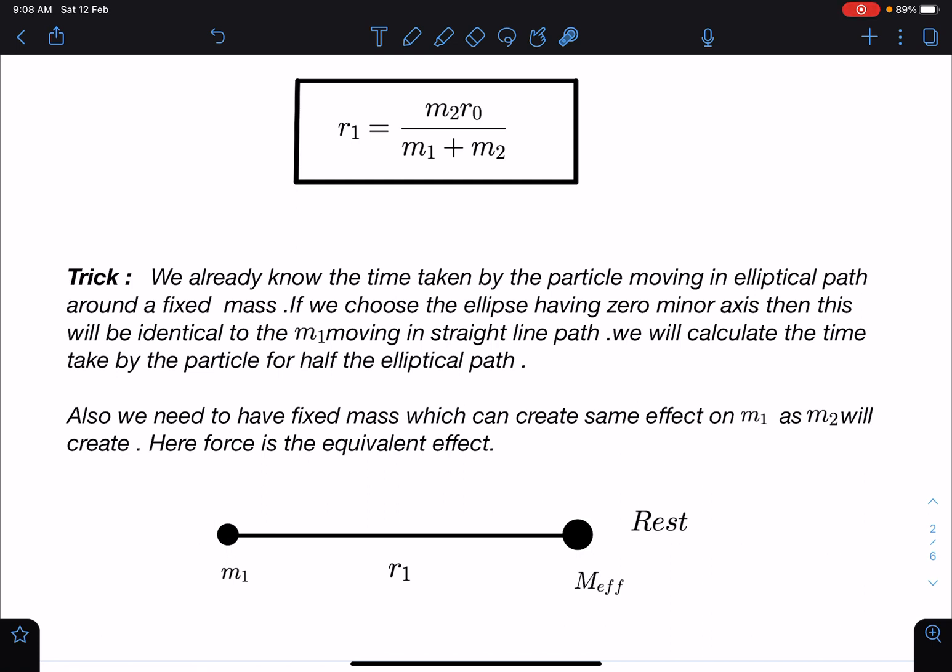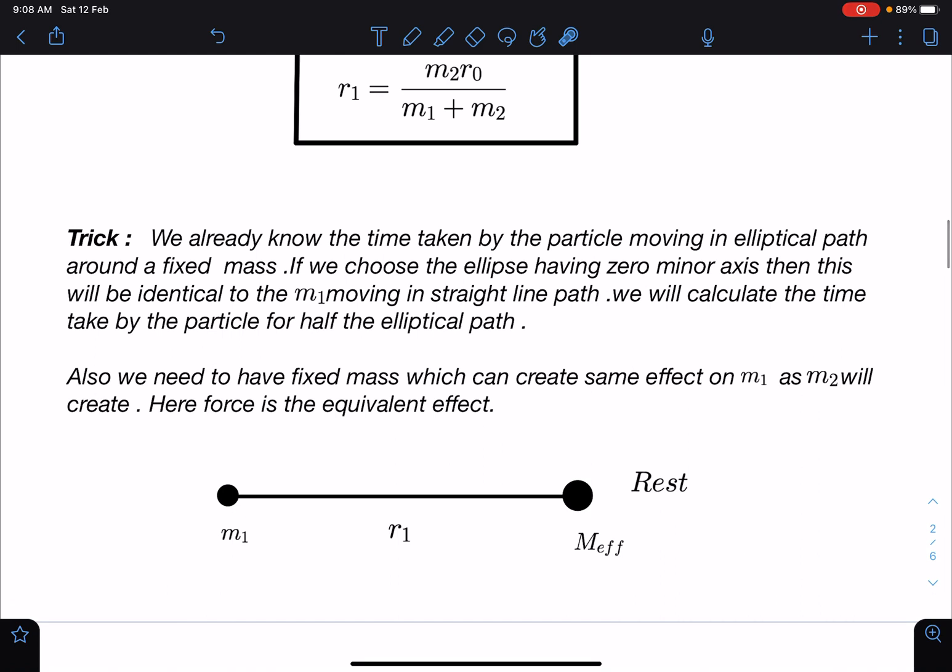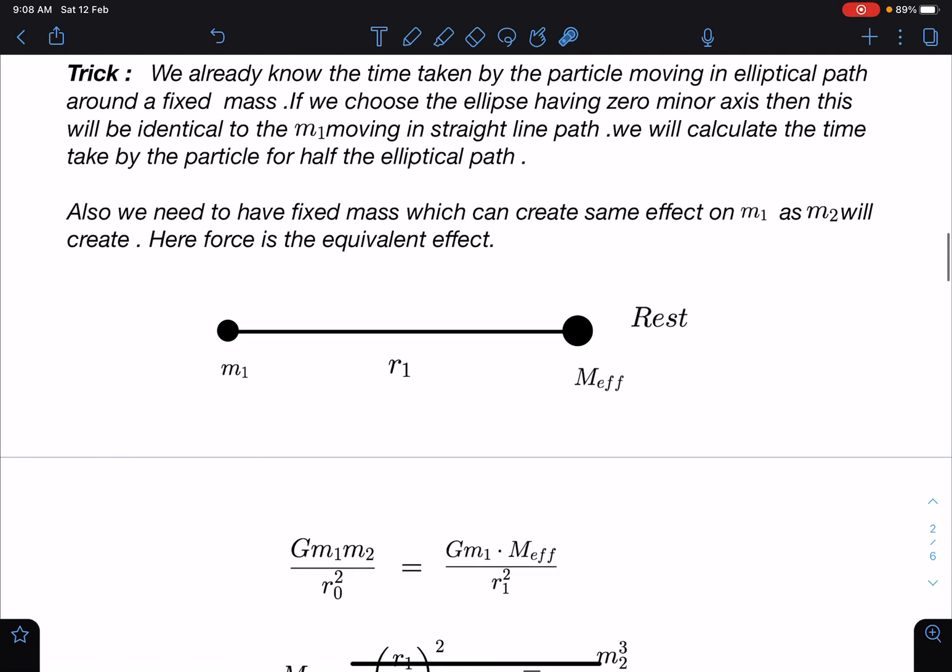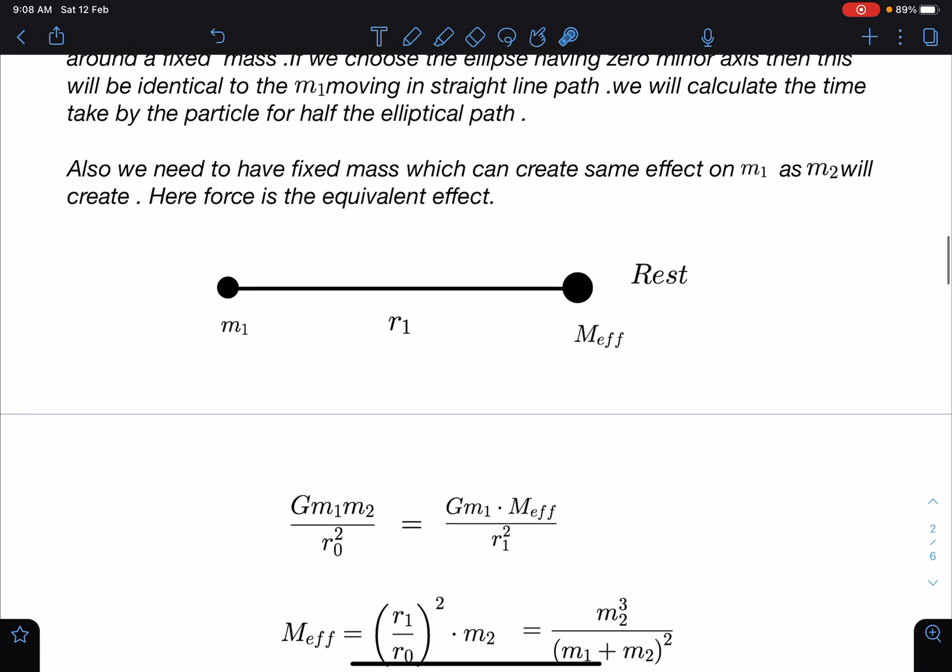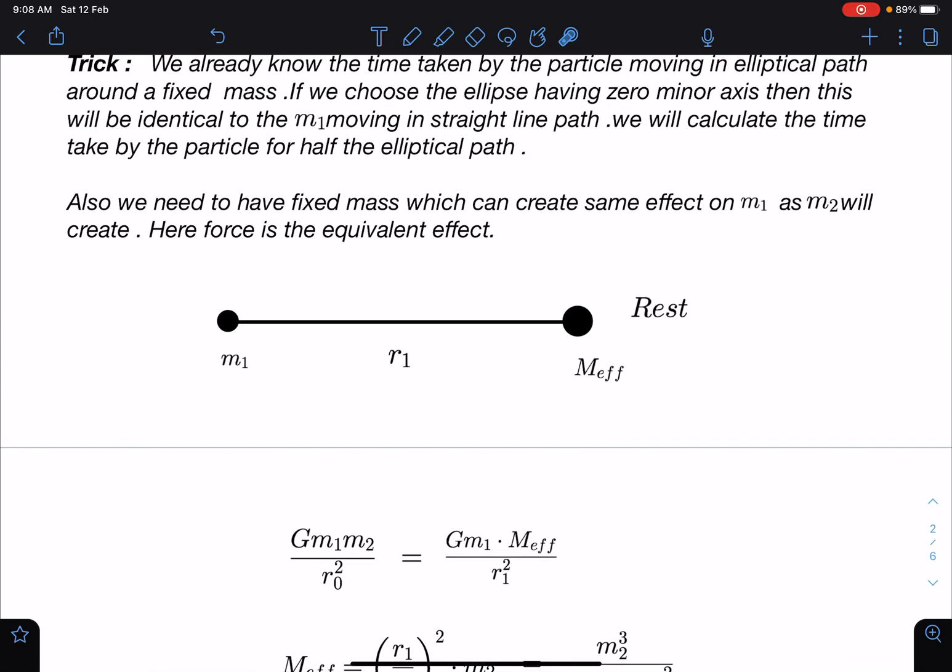So in order to equate that effect, I'll prefer the initial point itself. So if you see at initial point, if m2 is creating certain force on m1, this m effective also should create that similar field. So here I can write G m1 m2 by r0 squared, and this is G m1 m effective by r1 squared. So r1 we have already calculated; from here we are going to get this m effective.